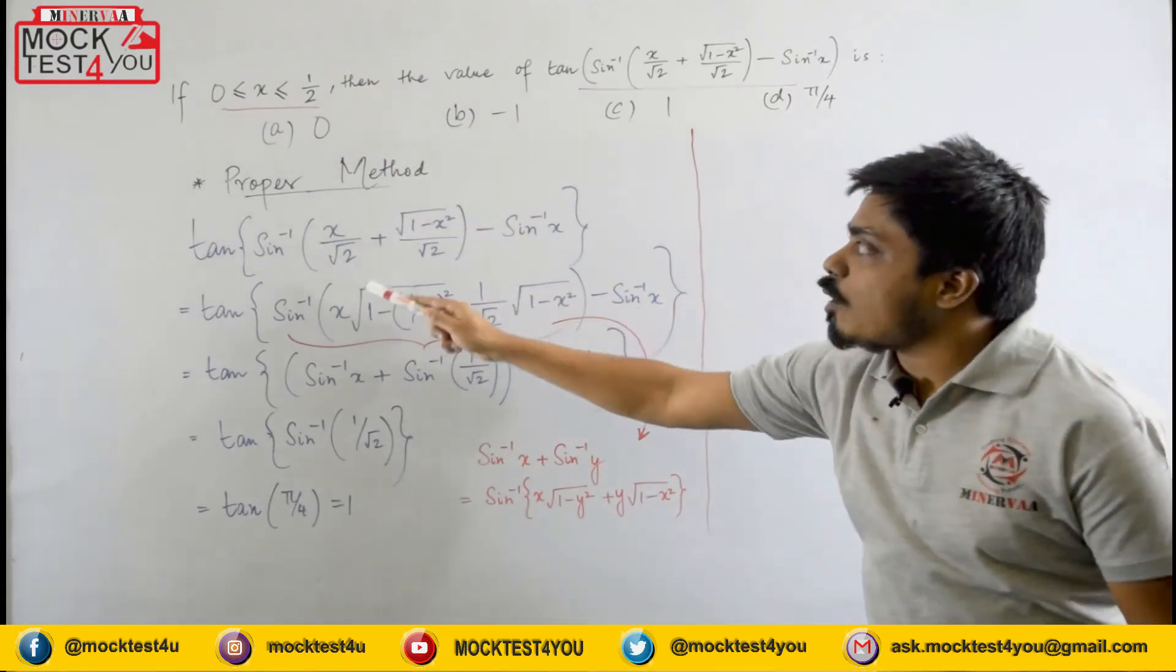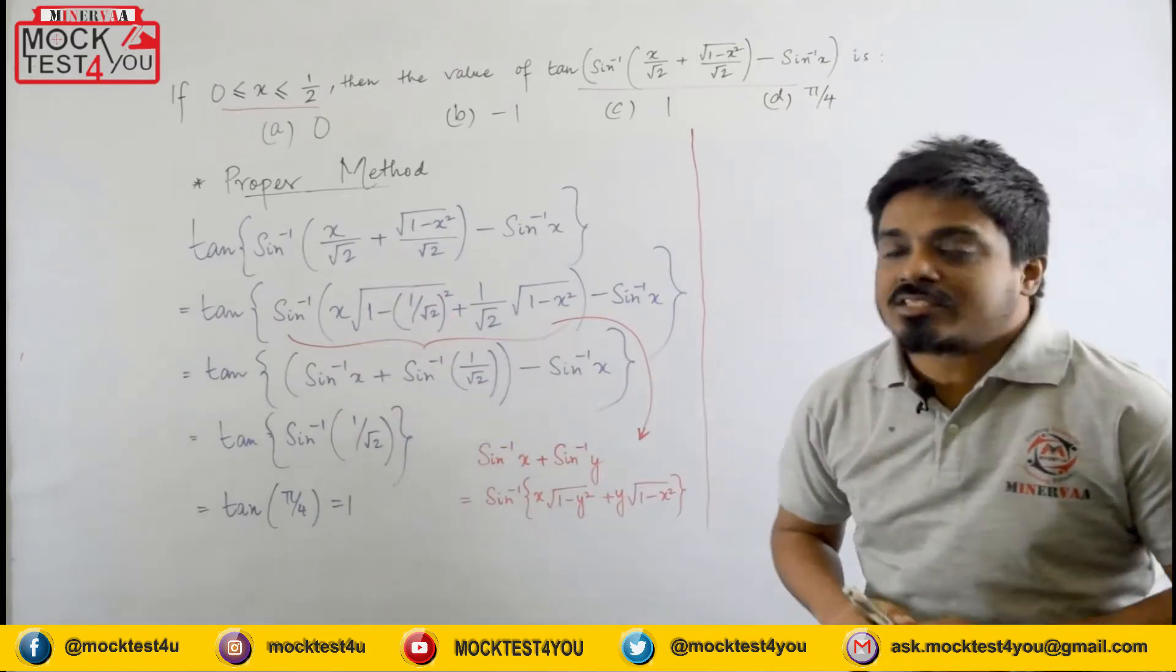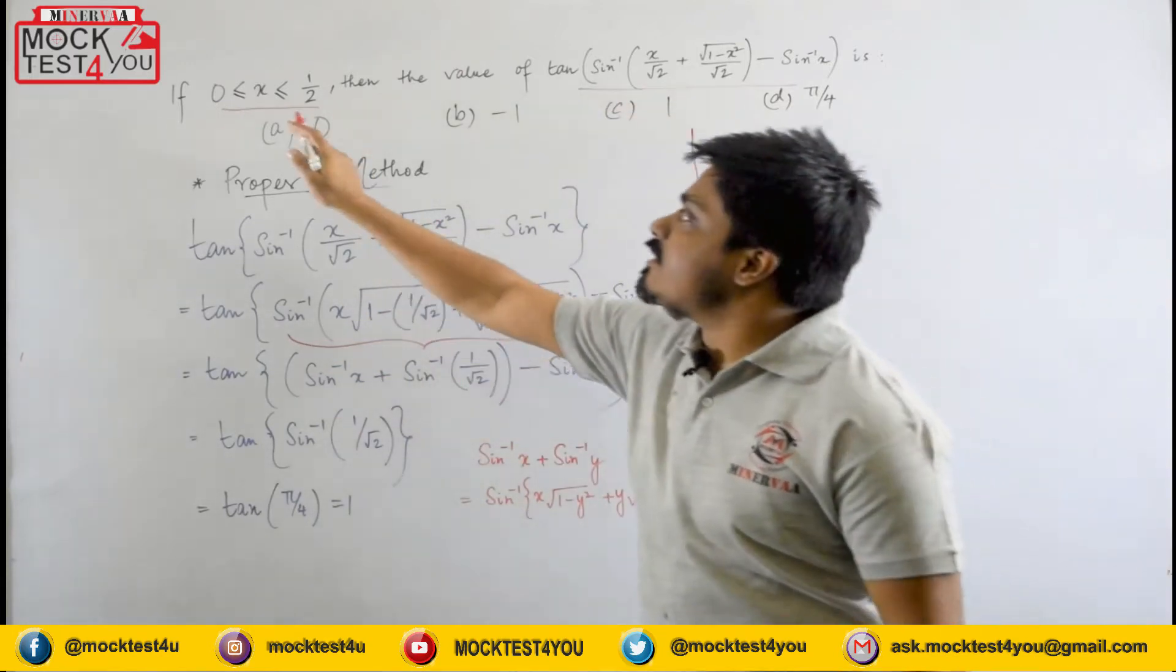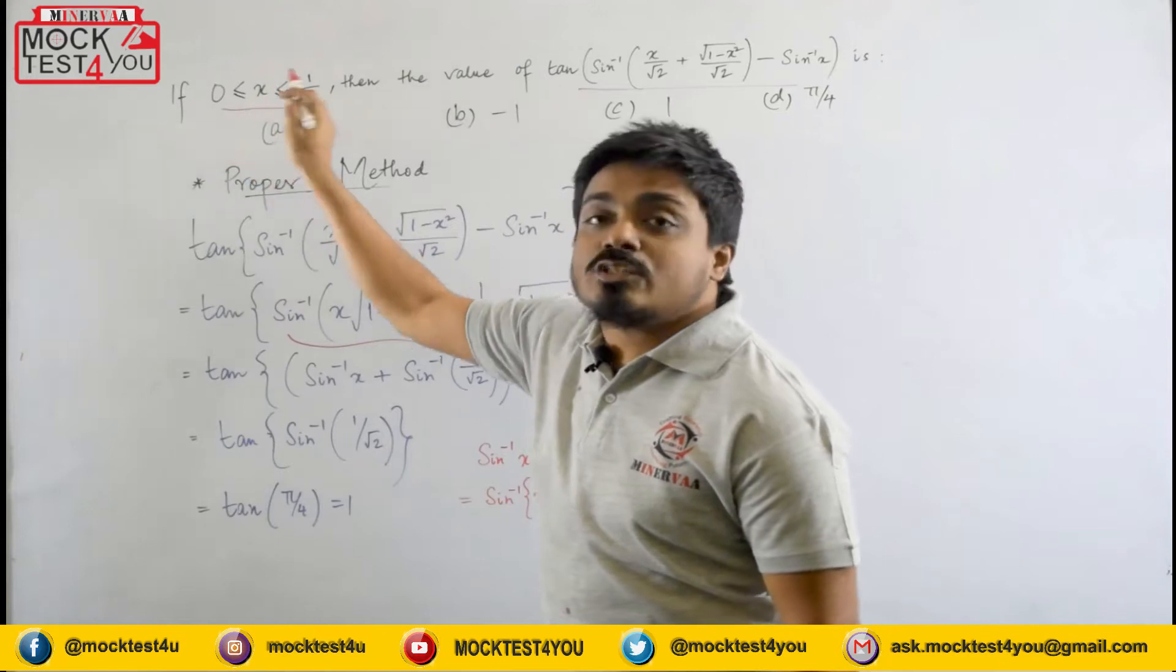So here you see a proper method to solve this question that is in five steps. So this is my question and here it says that the x value lies between 0 and half.